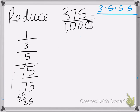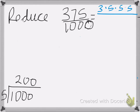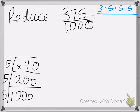Now we're going to do 1,000. I know I can divide that by 5. 5 goes into 10, 2 times, goes into 0, 0 times. Divide it again by 5 — 5 goes into 20, 4 times, that's 20. 5 goes into 0, 0 times. Divide by 5 again — 5 goes into 40, 8 times.